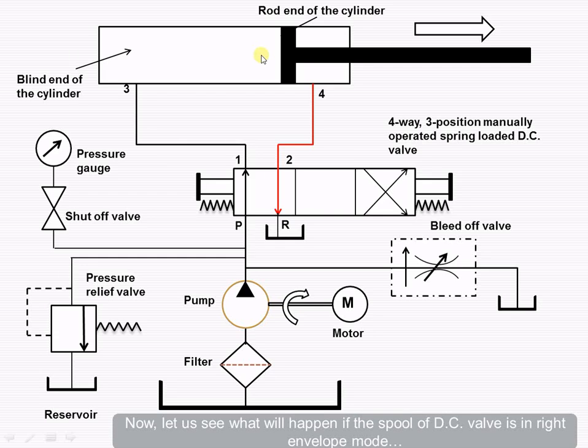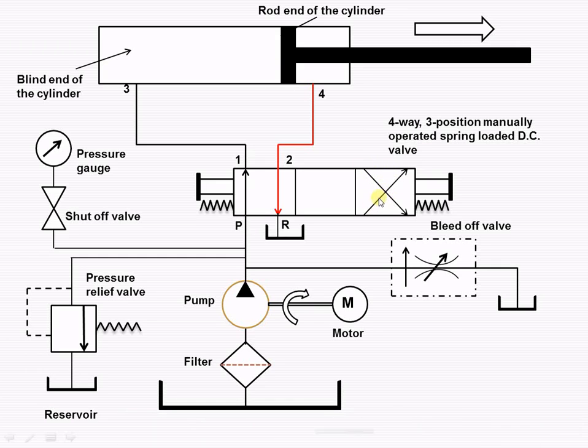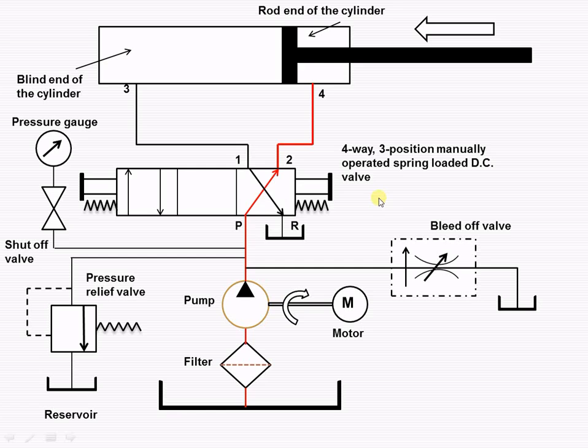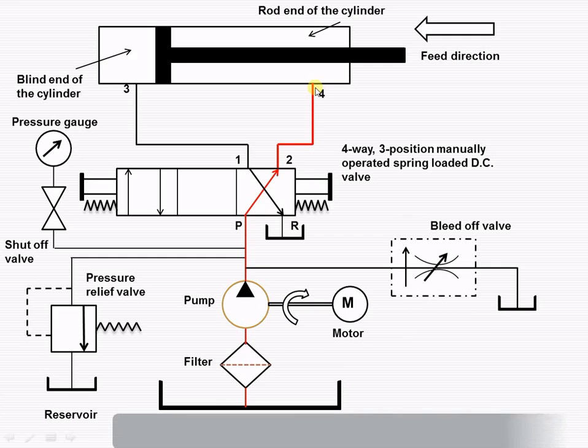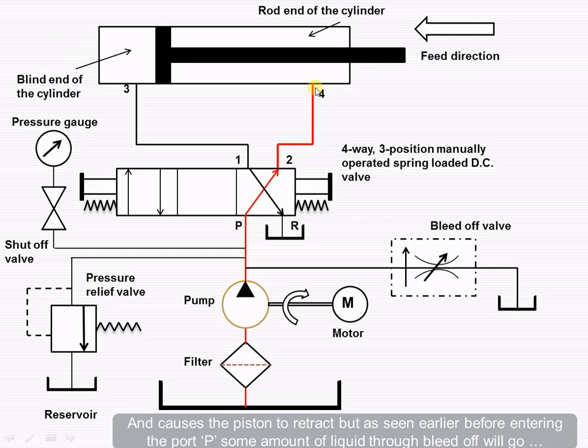Now, let us see what will happen if the spool of the direction control valve is in the right envelope mode. This is the right envelope mode. As shown in the figure, liquid enters from port P to port 2 and then into the rod end of the cylinder through port 4. This causes the piston to retract, as we have seen in the animation.